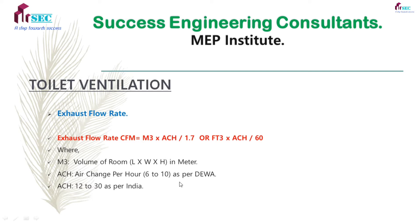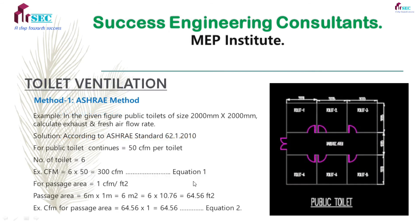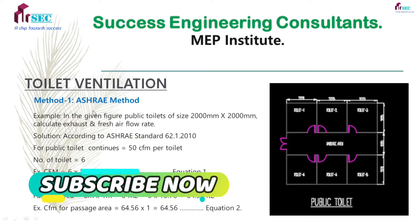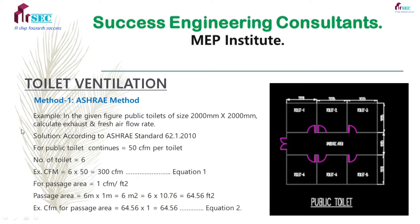DEWA stands for Dubai Electricity and Water Authority. ACH total up to 30 as per Indian standard. There are actually two methods — the first one is the estimation method.